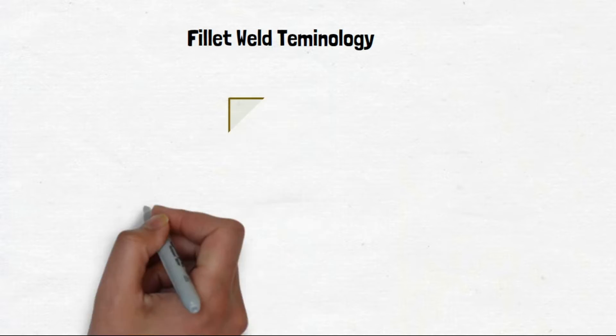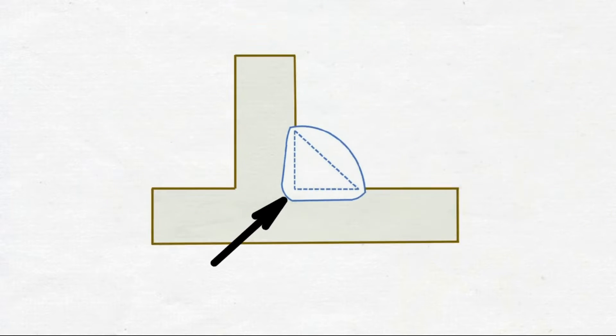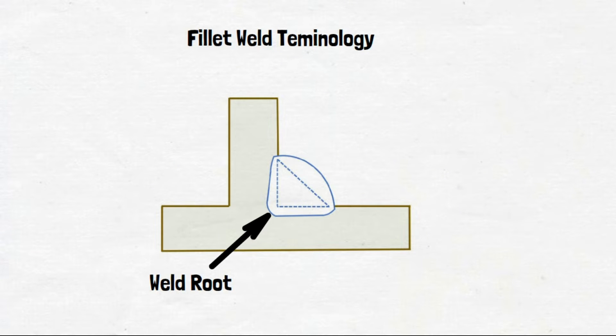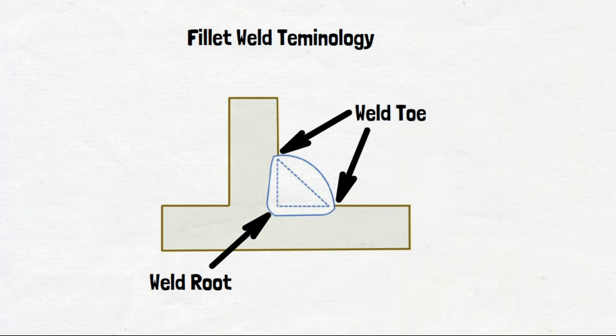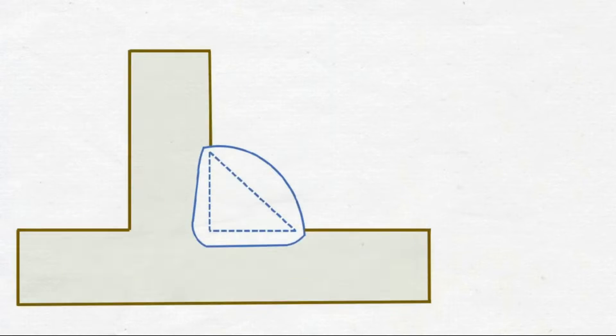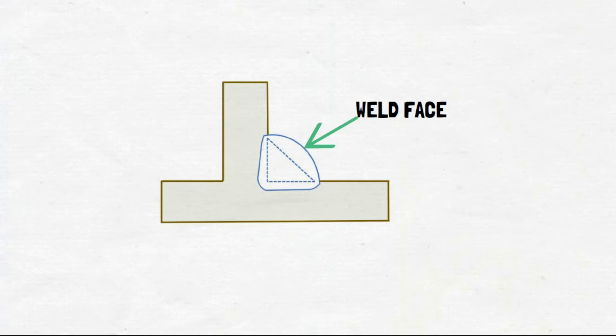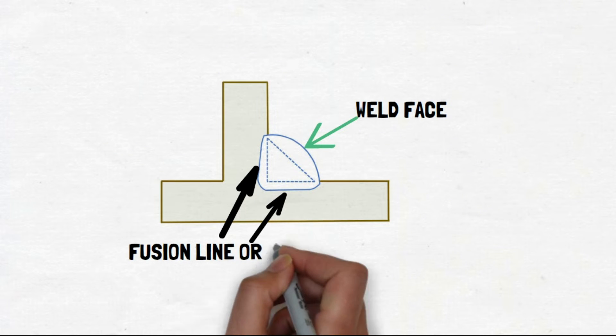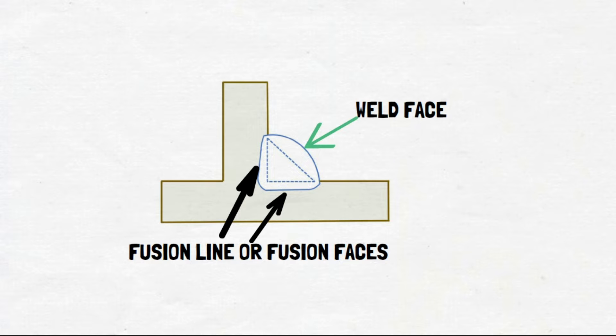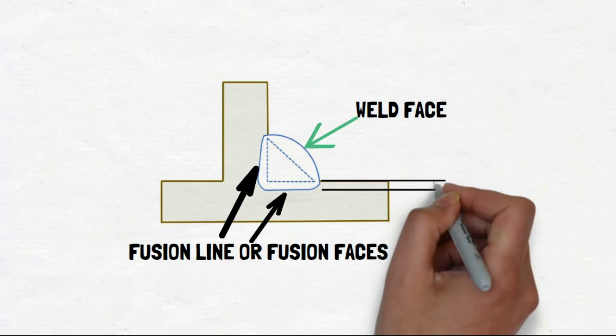Fillet weld terminology. Fillet weld has various parts. The center point joining both plate is called root. Outer corners are called weld toe. Outer side is called weld face. This is called fusion lines or fusion faces. This is depth of penetration.